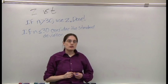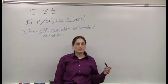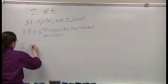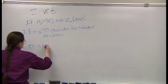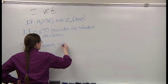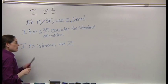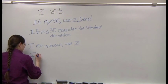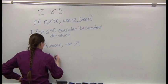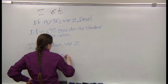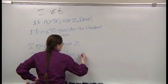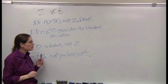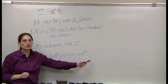If n is less than or equal to 30, consider the standard deviation. If you know the true population standard deviation, you can use Z. But if the sample standard deviation is all you have, you need to use T.